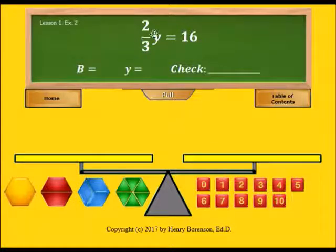So since it says two-thirds of y, I'm going to place one blue block here and I'm going to place a second blue block here. So I now have two-thirds of y on one side and on the other side has a value of 16.